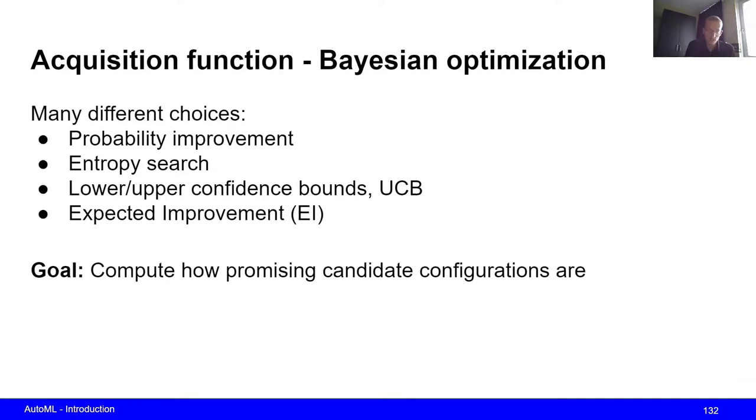All right, so for the acquisition function, which is kind of the quality estimate of the different hyperparameter configurations based on our surrogate model, there's many different choices that you can make here for this. So for example, you can use the probability improvement, entropy search, UCB bounds, and also the expected improvement, which is quite popular. And remember the goal of this function is really to compute how promising different configurations are based on our surrogate model.